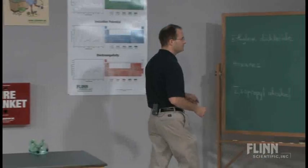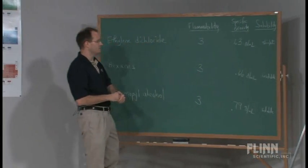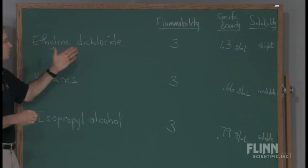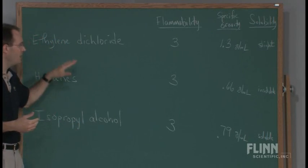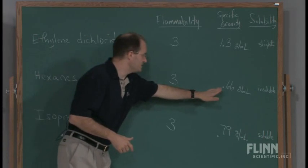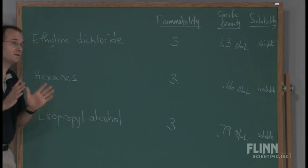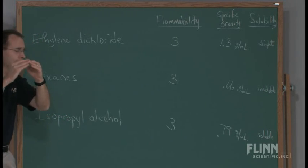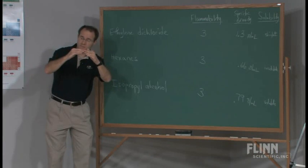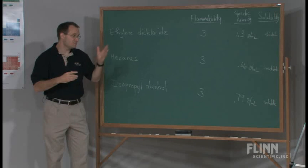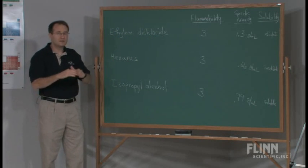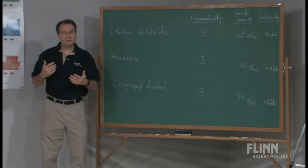They would then have to find the specific gravity values. Ethylene dichloride has a density or specific gravity of about 1.3 — therefore it is more dense than water, and would be expected to be at the bottom of the Erlenmeyer flask. Hexanes: 0.66 grams per milliliter — that fits what we need, it would be on top. Isopropyl alcohol has a specific gravity of approximately 0.79, which would also be expected to be on top of the water. So at this point, we could eliminate ethylene dichloride because that would be at the bottom.